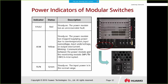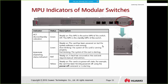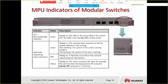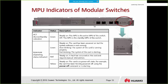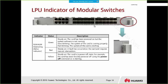For modular switches, all the power supplies are located at the bottom of the switch, and the meaning of these indicators is not significantly different. On the MPU — the main control board — we should check the active indicator and the run/alarm indicator. The active indicator is used to indicate whether this board is the active board or standby board. On the LPU, it also has run and alarm indicators.